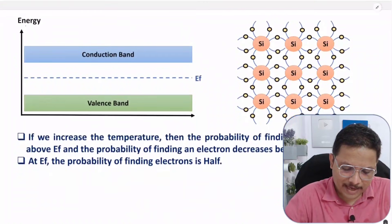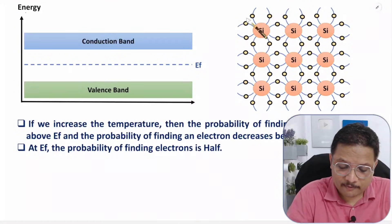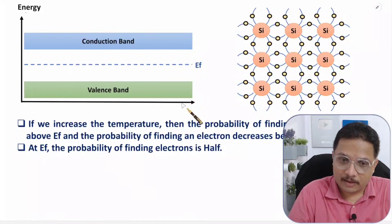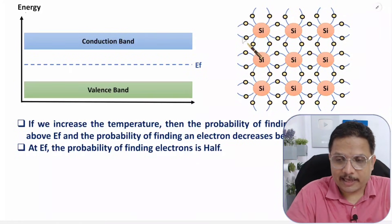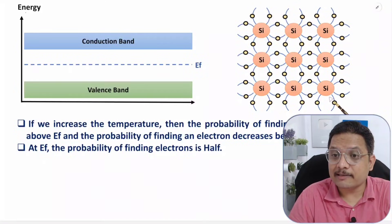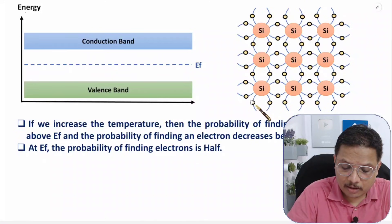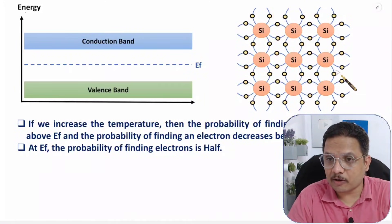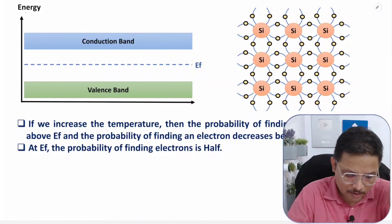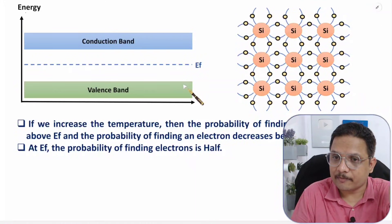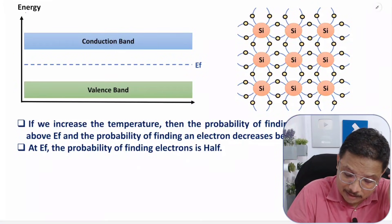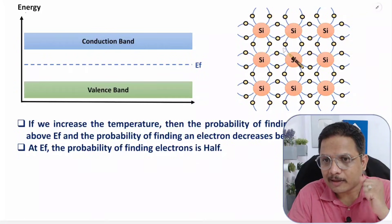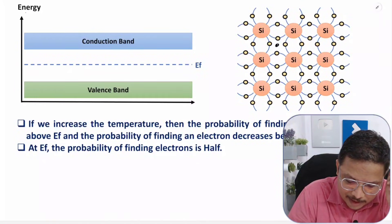Let me take a practical example. Here we have a semiconductor material of silicon with an energy band diagram. This is the valence band and this is the conduction band. At zero Kelvin temperature, all electrons are valence electrons — there are no free electrons. As we increase the temperature, electrons will break covalent bonds and become free.